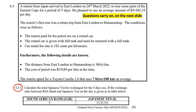The tourist's first tour was a return trip from East London to Humansdorp — so he went from East London to Humansdorp and then back to East London because it's a return trip. The conditions are as follows: the tourist paid for his petrol on a rented car. The rented car is given with a full tank and must be returned with a full tank. The car rental fee rate is 182 cents per kilometer. The cost of petrol is 19 rand 89 cents per liter. The tourist opted for a Toyota Corolla 1.6 that uses seven liters per hundred kilometers.